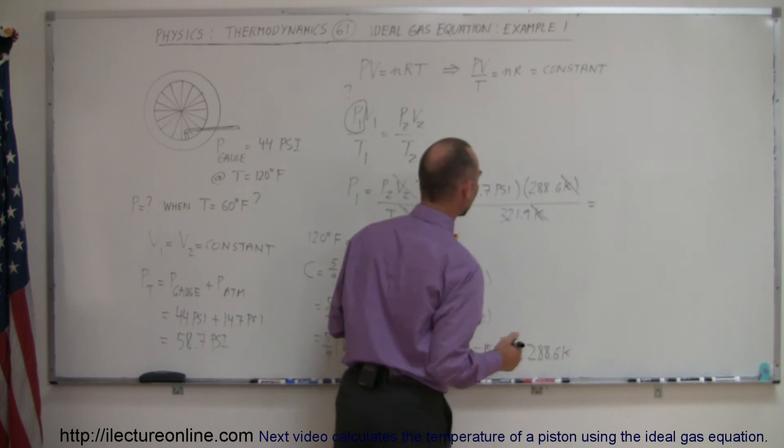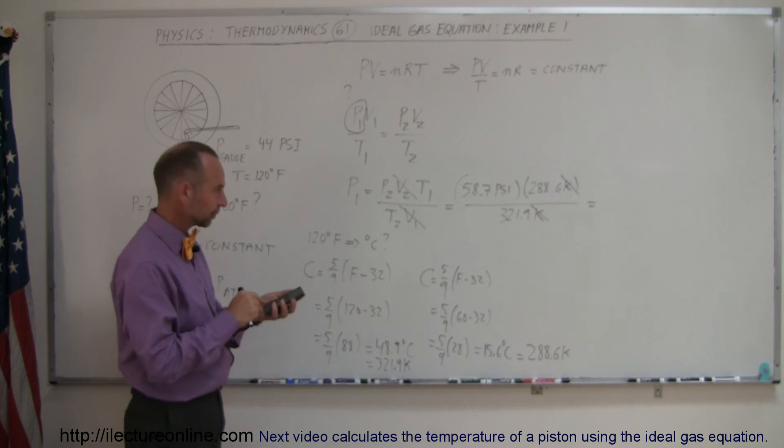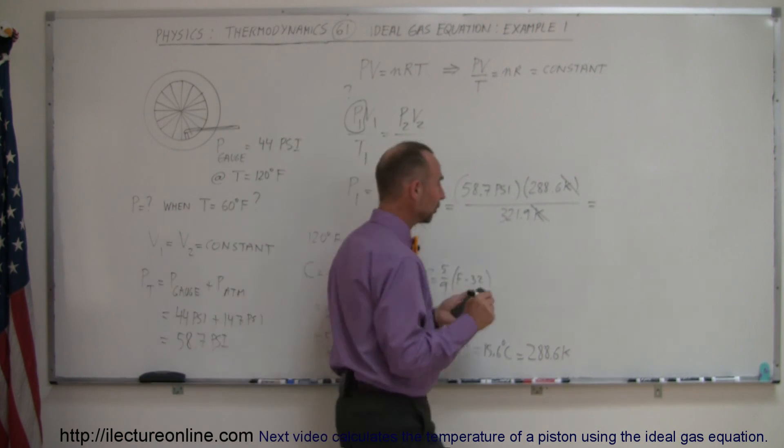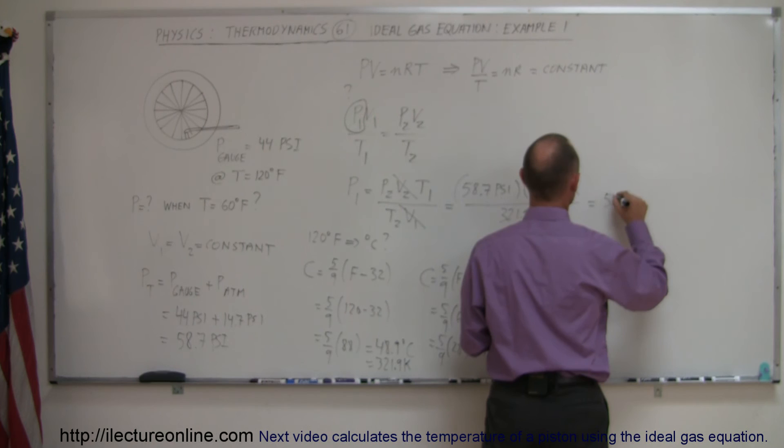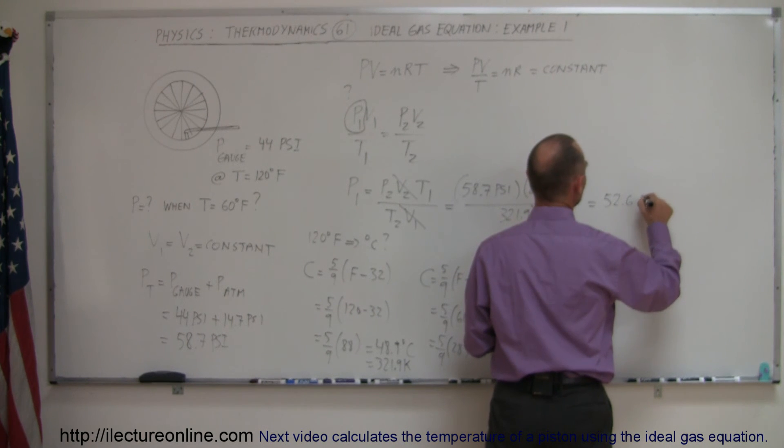Notice that the Kelvin cancels out. We have the answer in PSIs. So we have 58.7 times 288.6 divided by 321.9. And that gives us 52.6 psi.